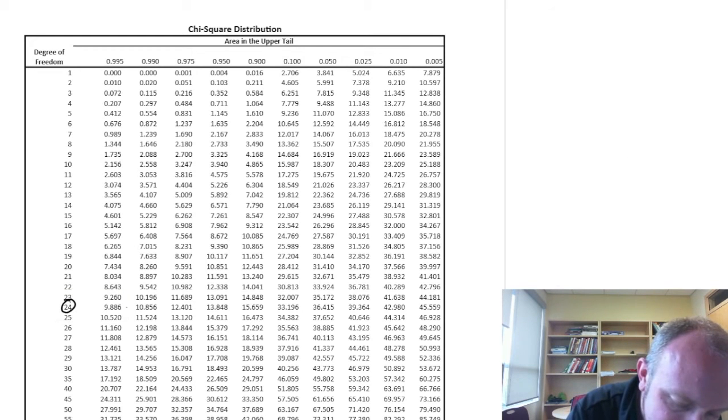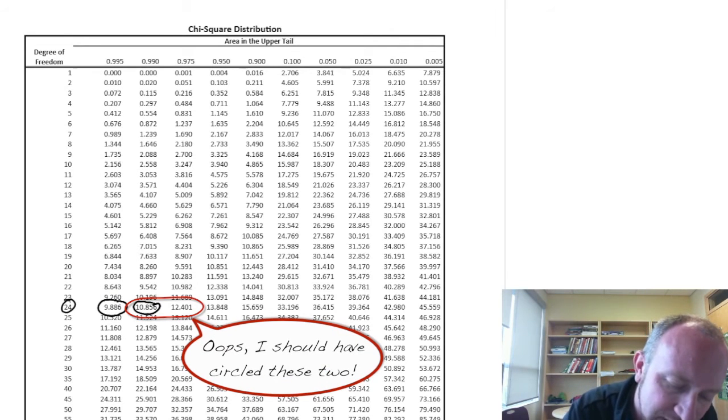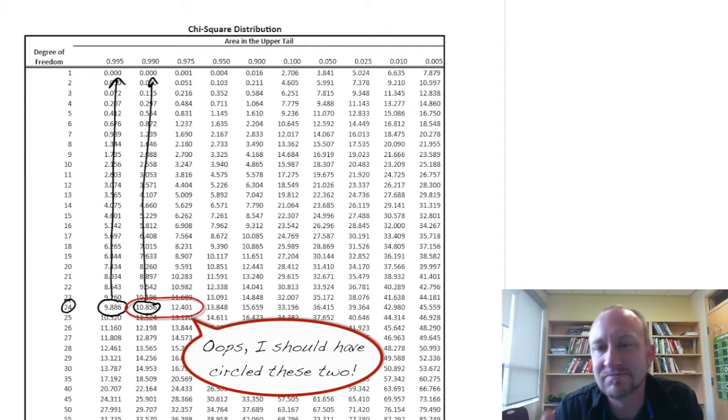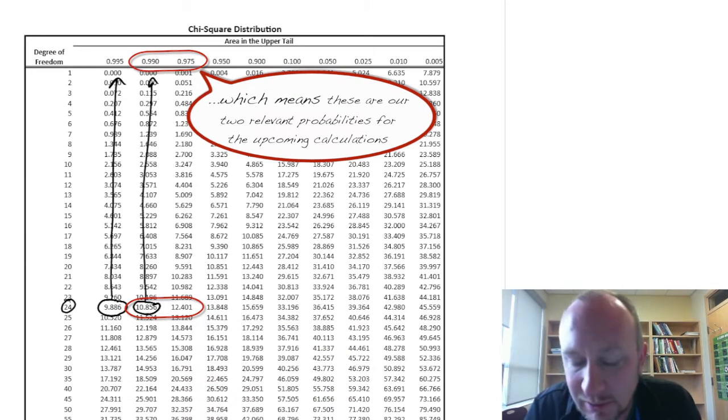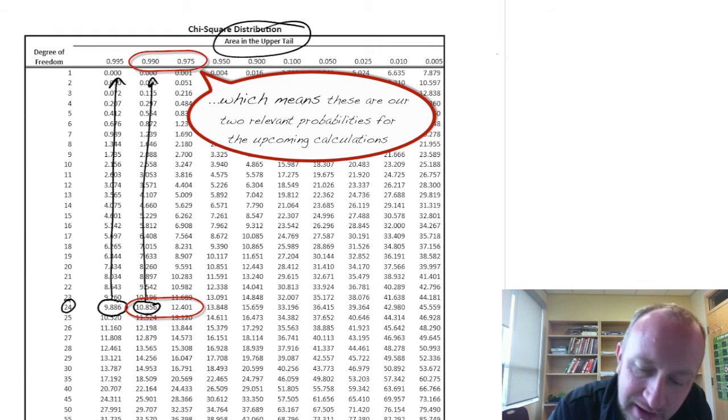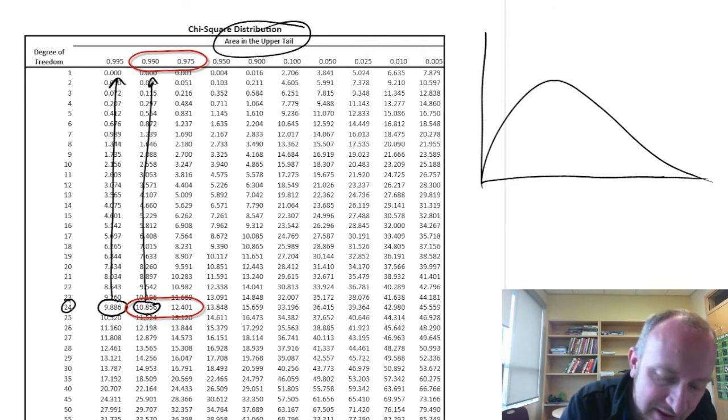So here we have 24 and our test statistic was 10.97. So I'm going to go through and oh it's right in between these values here. Well not right in between but somewhere in between those values. And so here are these probabilities that we want to deal with. Now this brings up one more little kind of a hiccup, a little issue with this table. Again because this is giving us areas in the upper tail. So what we've got here is some distribution. I don't know what it looks like, something like this. And let's say I just work with 10.8. So here I have this value 10.8.